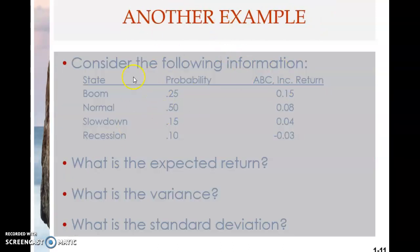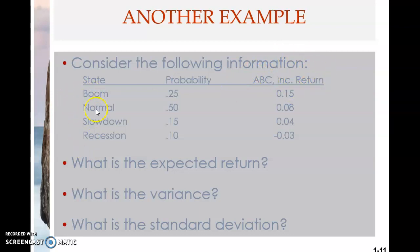Now there is another example, but I'm not going to go through it because it is similar — you can try it on your own, and the answer is already in the slide. The difference here is that you have four states of the economy instead of three, and you have only one stock. Otherwise it's the same: first compute the expected return, then compute the variance, then compute the standard deviation. You just follow the same steps.